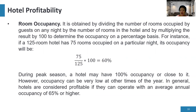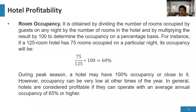During peak season, a hotel may have close to 100% occupancy. However, occupancy can be very low during lean seasons. In general, hotels are considered profitable if they can operate with an average annual occupancy of 65% or higher.